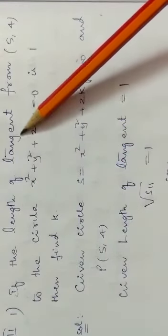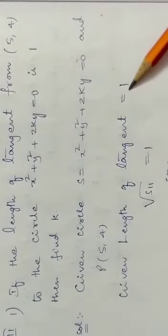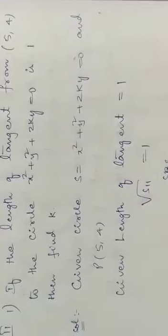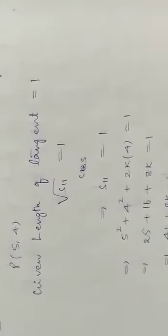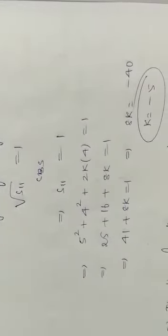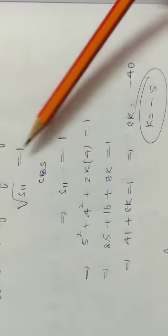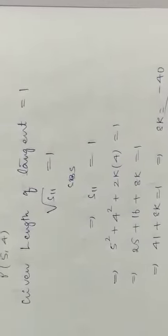Given length of tangent is 1. Length of tangent formula is root S11. If we don't want root, we square both sides. So, S11 equal to 1. Now, S11 means replace the point in the circle.